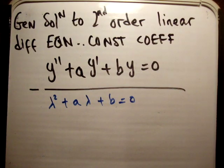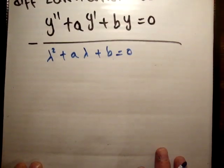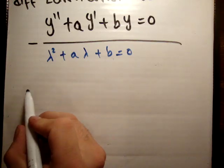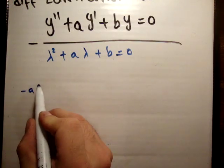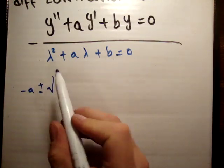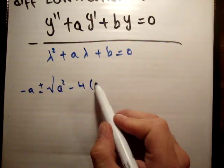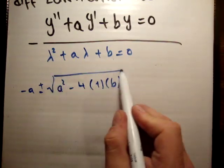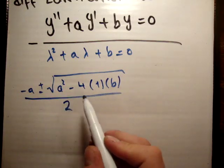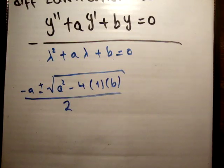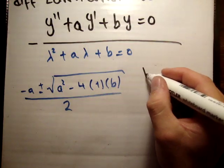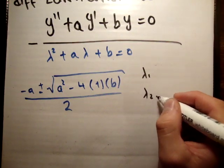Next we solve the characteristic equation using the quadratic formula: lambda equals negative a plus or minus the square root of a squared minus 4b, all over 2. This gives us two roots: lambda 1 and lambda 2.